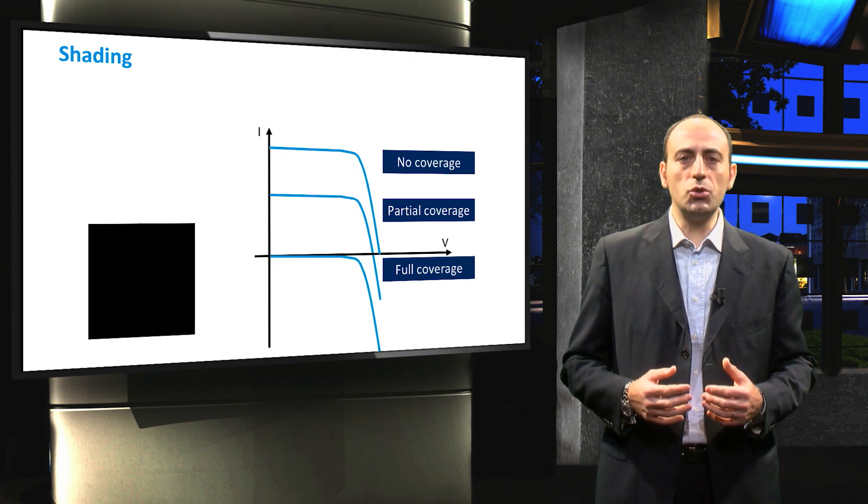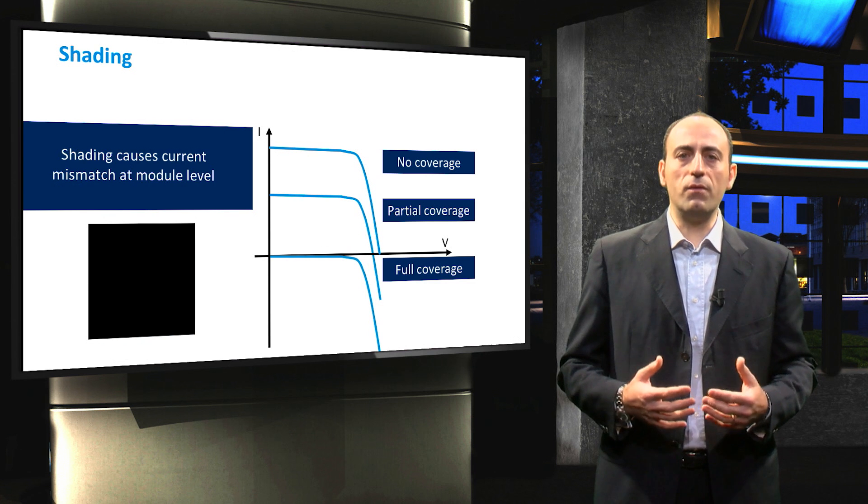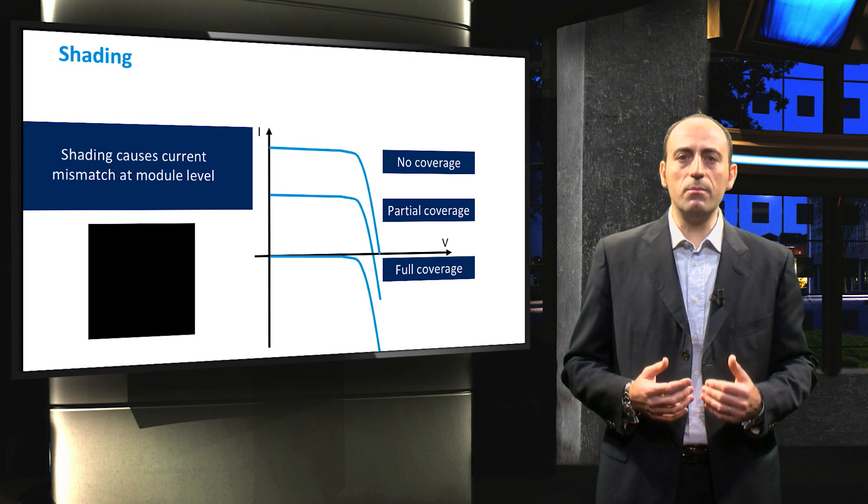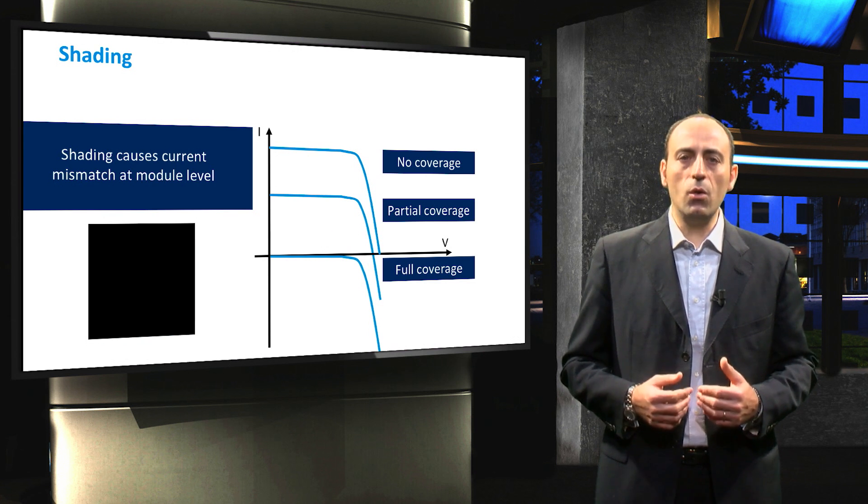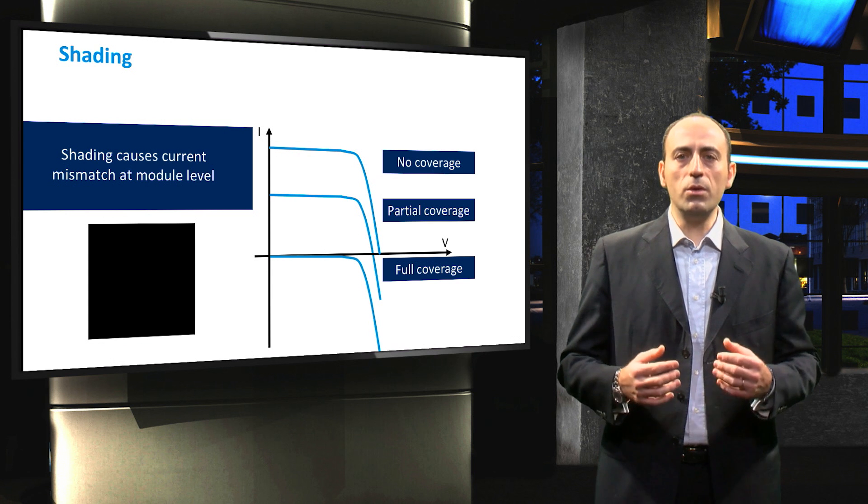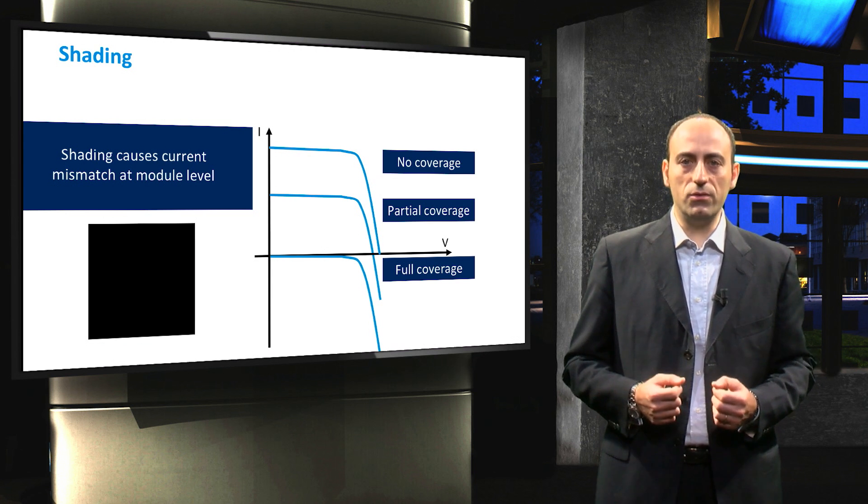Problems arise at module level because the shading of a single cell implies a current mismatch in the PV module. So it is important to know what is the topology and how the cells are connected together. For example, depending on how you mount the module, vertically or horizontally, and its internal configuration, your module can be more resilient against shading.